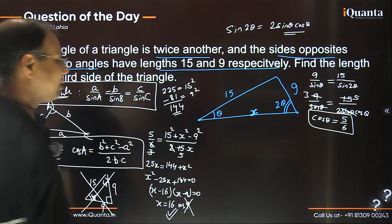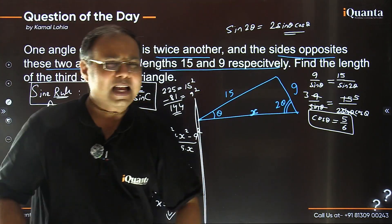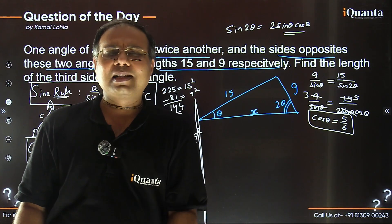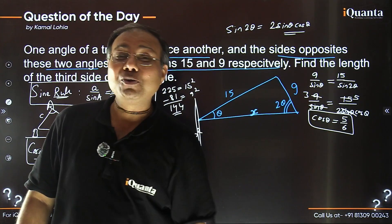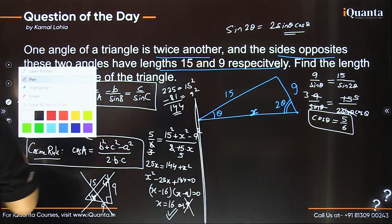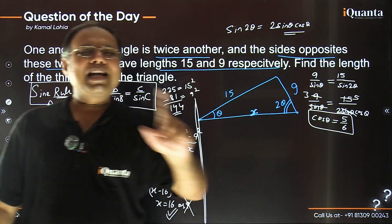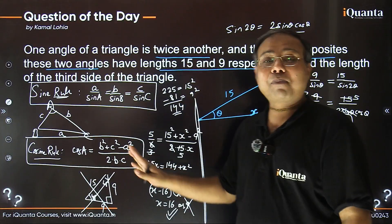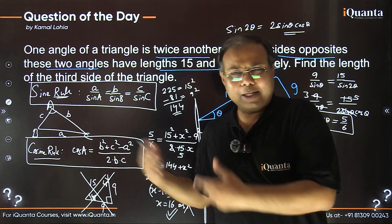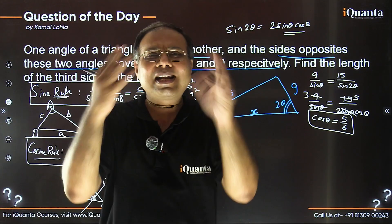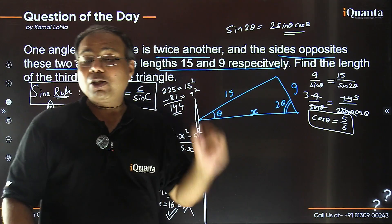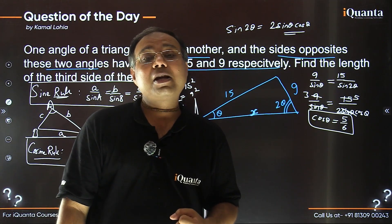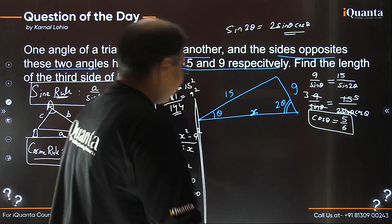Now let's discuss the non-trigonometric, intuitive, visualization-based way. The drawback of trigonometry is you need to remember many formulas and apply them carefully. The benefit is less thinking required. The non-trigonometric way requires more thinking — using imagination, intuition, and creative visualization. I'm going to do a construction: I'm extending one side of the triangle.